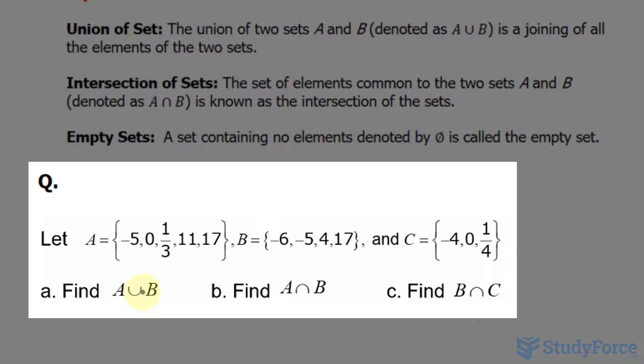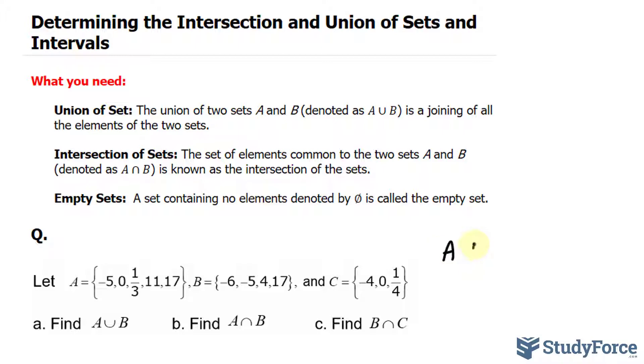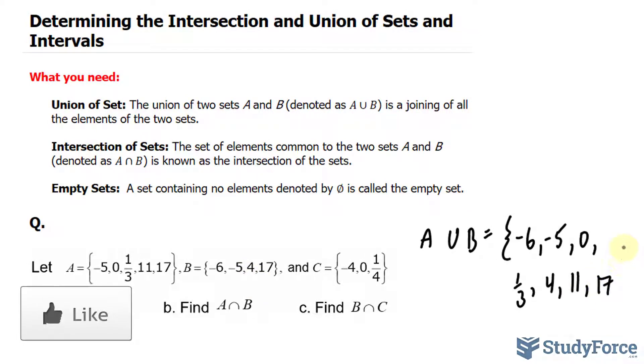Find the union of A and B. For this we have to list all the elements found in A and B, and we don't want to write any duplicates. So starting with the smallest value in both, it's negative six, I'll write down negative six, then comes negative five. Notice that negative five is common in both, so we only write it once. Zero, a third, four, eleven, and seventeen is common, so we write it once. That's the answer for A.